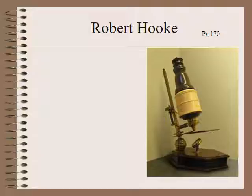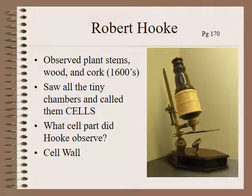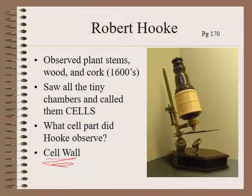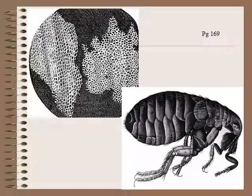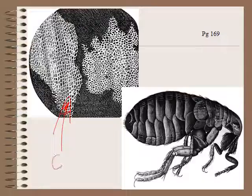Around the same time, Robert Hooke was also using the microscope — his was more in line with what you would see today. He liked to look especially at plants: plant stems, wood, and cork. Inside cork he saw tiny little chambers that he called cells. The story goes they reminded him of a monastery with little rooms for the monks, so he called them cells. He was actually observing the cell wall of the dead cork plant — there were no organelles inside, just the cell wall that was left over.